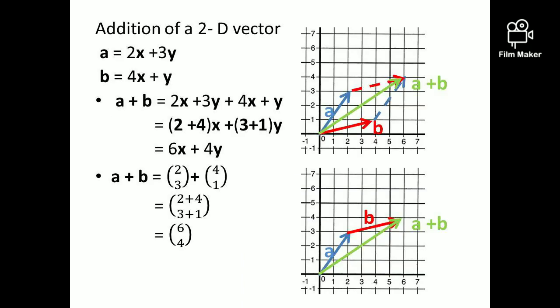Let's work out this question. We have to add two vectors A and B. Vector A is 2x + 3y and vector B is 4x + y. If we add A + B, that is 2x + 3y + 4x + y. The same way we do algebraic addition, we add x components separately and y components separately: 2x + 4x = 6x, and 3y + y = 4y. If you use matrix notation, A + B = (2, 3) + (4, 1). Adding first rows: 2 + 4 = 6; second rows: 3 + 1 = 4. You obtain the same answer: 6x + 4y.